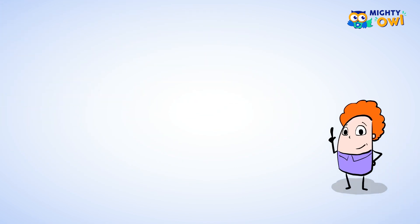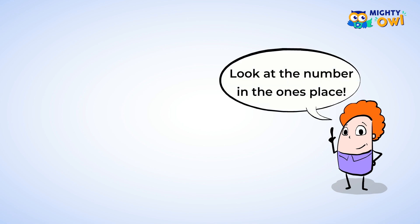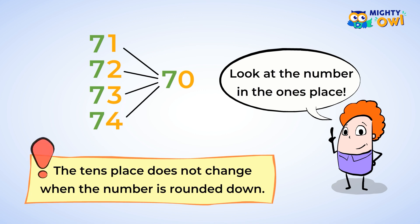A quick way to know whether to round up or down is to just look at the number in the ones place. If there's a one, a two, a three, or a four in the ones place, then round down to the previous ten. What you need to remember here is that the tens place does not change when the number is rounded down.